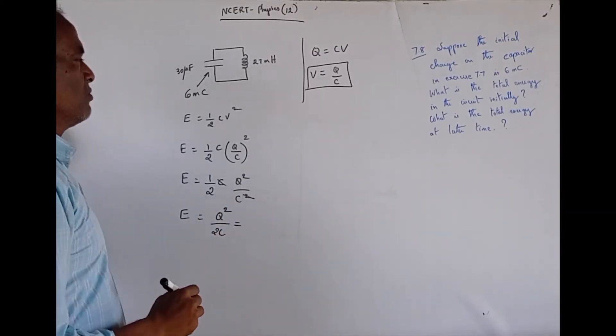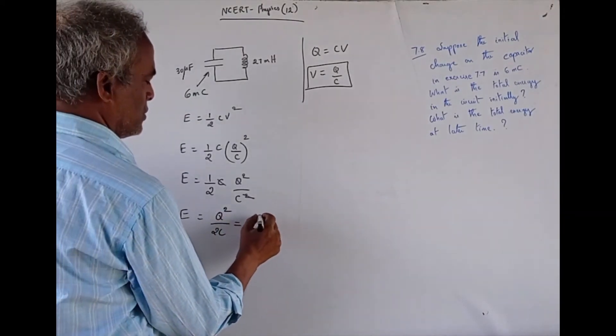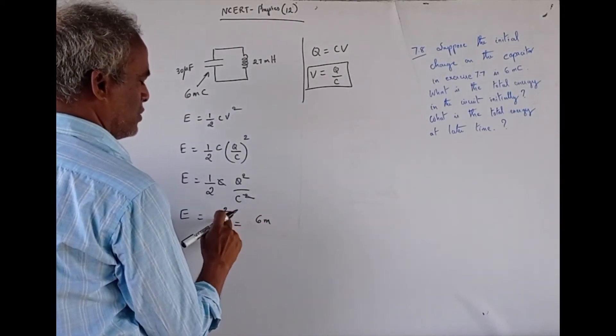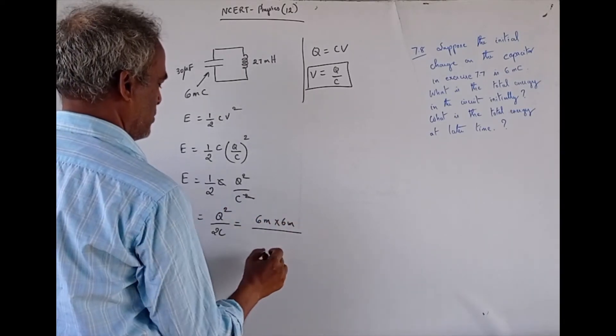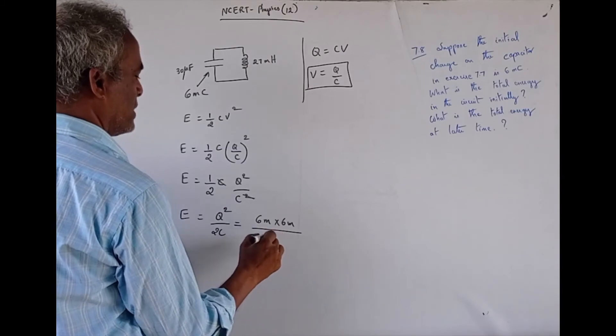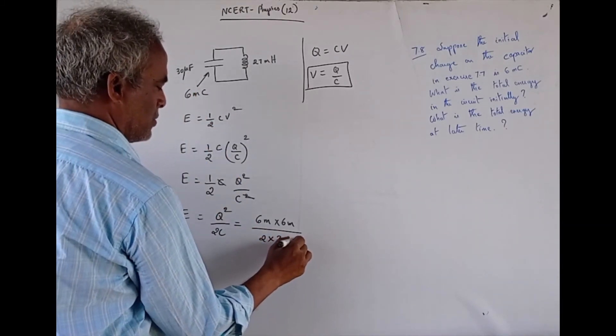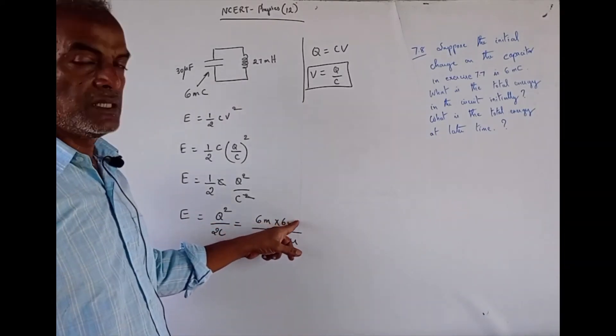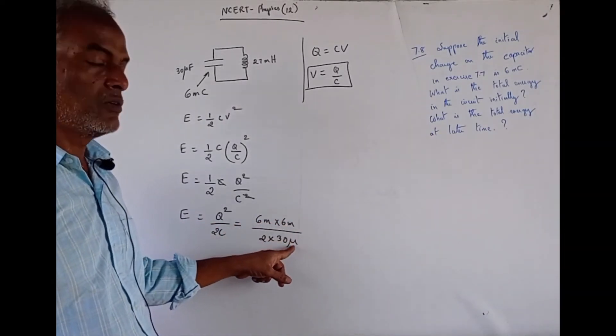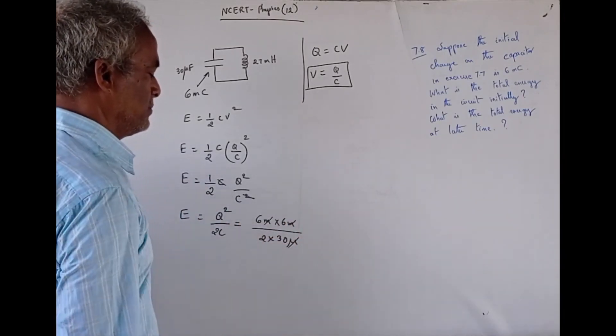Now, we know the value for charge which is 6 millicoulomb. So, 6 milli square into 6 milli square divided by 2 into capacitance value. That is 30 microfarad, 30 micro. Milli square 10 power minus 3, 10 power minus 3, 10 power minus 6, micro is 10 power minus 6. So, these terms will get cancelled.